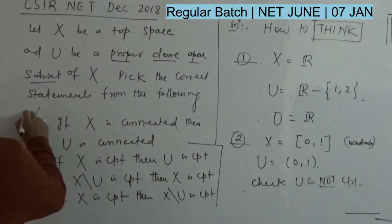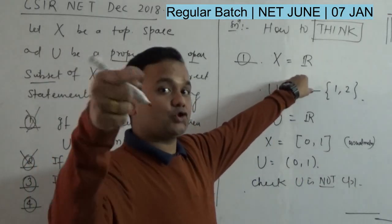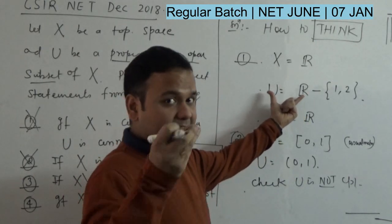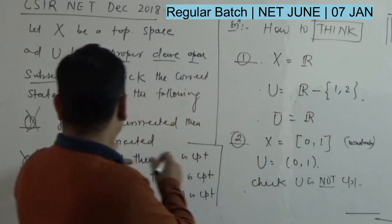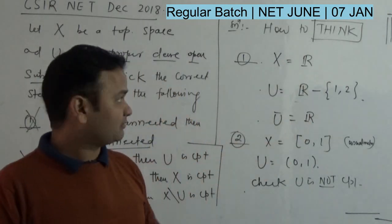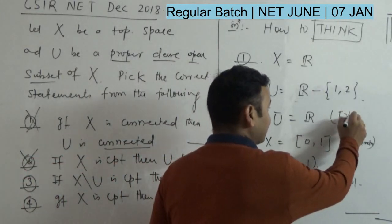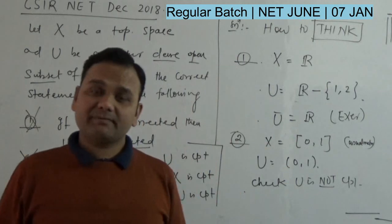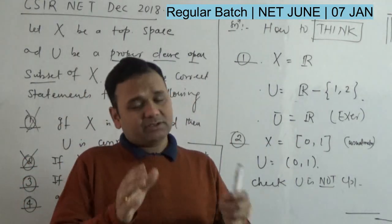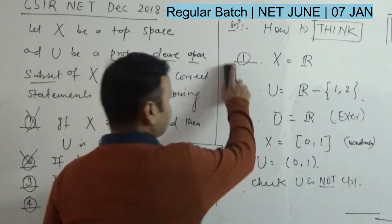So the first option is wrong as well as the second option is wrong. Here U is R minus {1,2}. R is connected with respect to the usual topology. This is the set which is open, proper, and dense. But U is not connected because connected subsets of R are intervals and U is not an interval. This is your exercise; you have to try it.